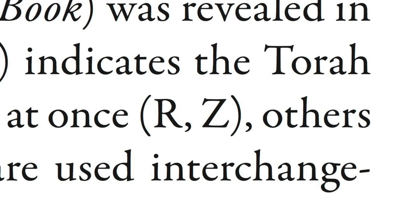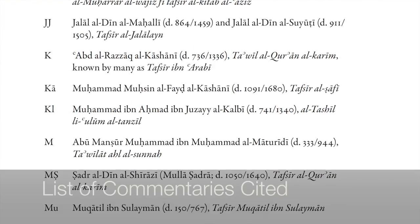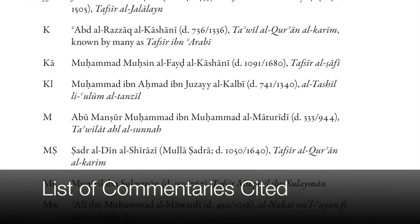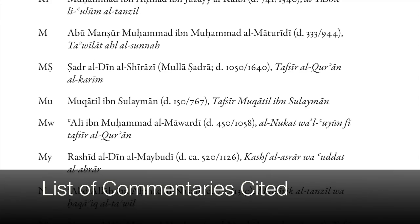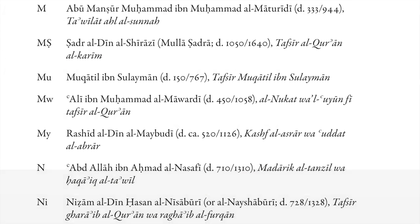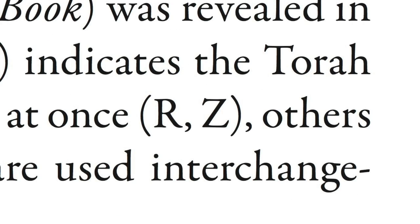The capital letters in parentheses indicate that the information mentioned in the Study Qur'an commentary comes from one of these works. They are listed in the front of the book by the capital letter used to identify them. The citation of R for Razi, for example, does not mean that he necessarily held the opinion cited, but only that he mentions it in his work.